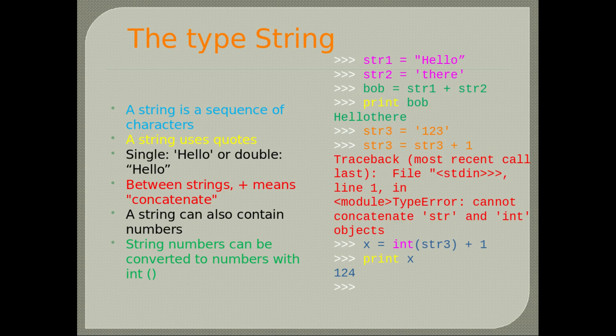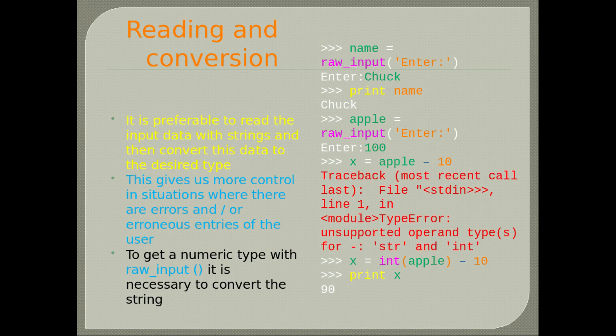Strings. A string is a sequence of characters. A string uses quotes, single or double. Between strings, plus means concatenate. A string can also contain numbers. String numbers can be converted to numbers with int(). If we do not convert, there will be a type error since you cannot add strings and integer types together. It is preferable to read input data as strings and then convert to the desired type.